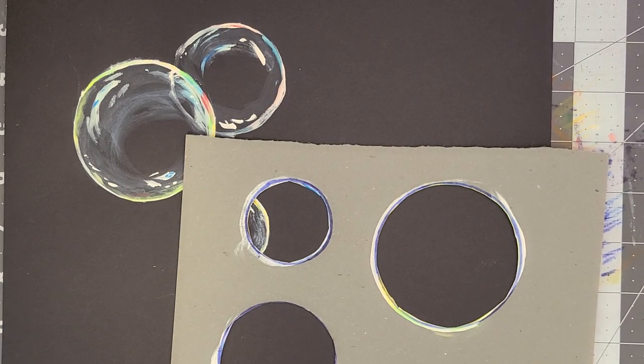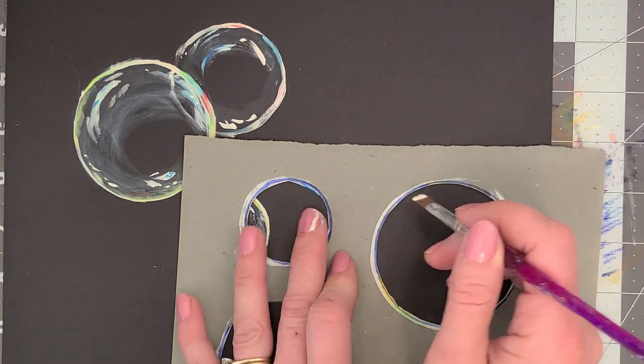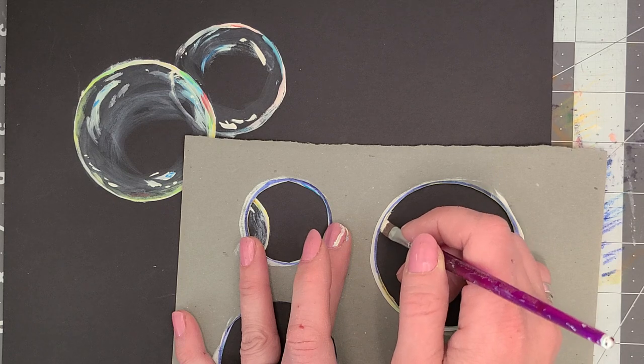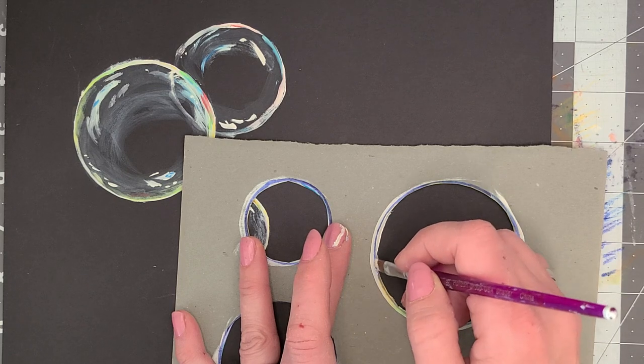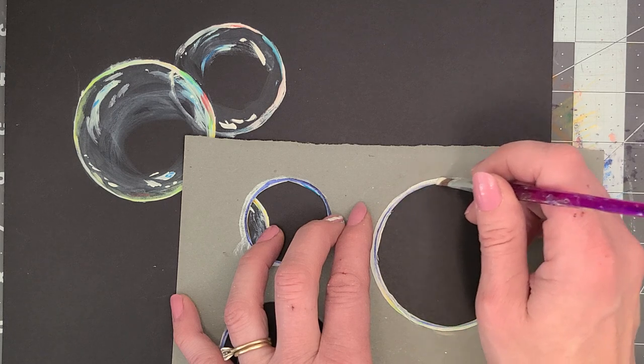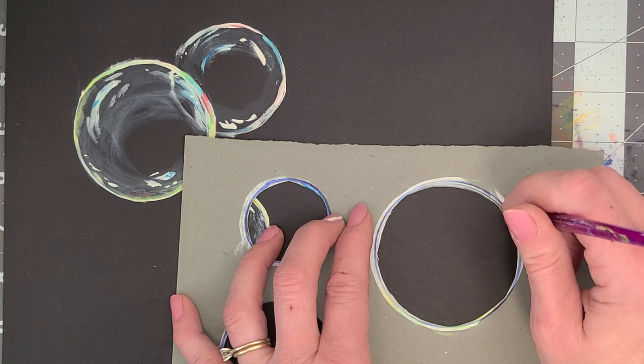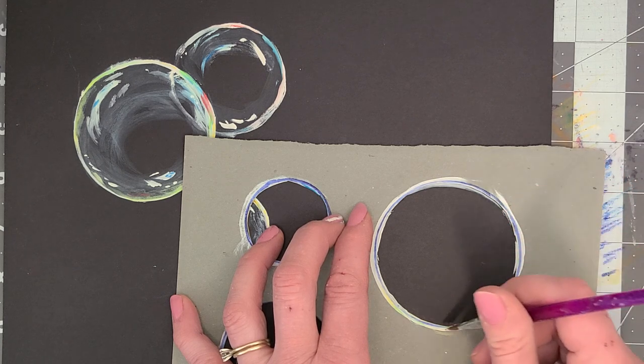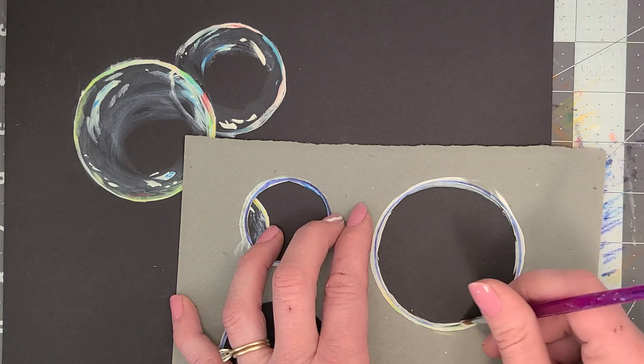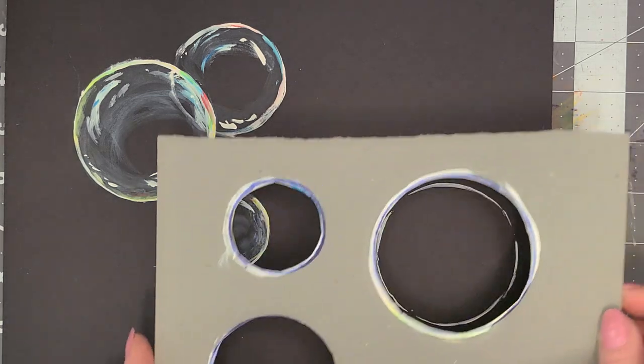So first what I'm going to do is I've got a little bit of white and I'm just going to go really lightly around the inside of my stencil. If it doesn't get absolutely everywhere that is okay because I'm just trying to get the outline. There you go.